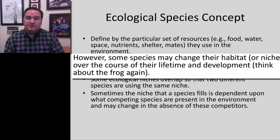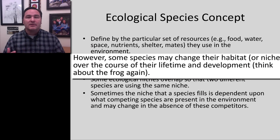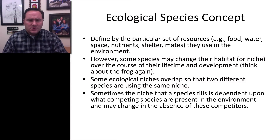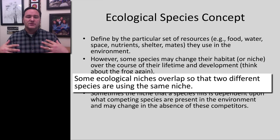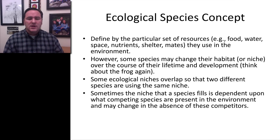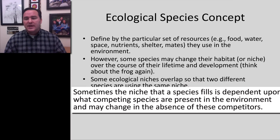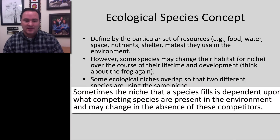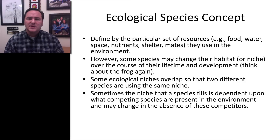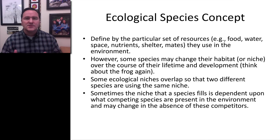A disadvantage of the ecological species concept is that some species change their habitat over their lifetime or developmentally — like a frog, which is aquatic as a tadpole and then becomes terrestrial. Also, some ecological niches overlap, so two species may use essentially the same niche, making it hard to define boundaries. Additionally, the niche a species fills can depend on which competing species are present, and may shift if those competitors are absent.